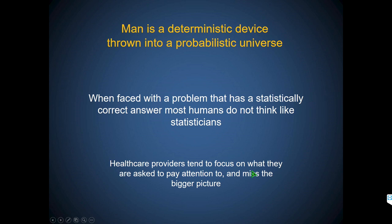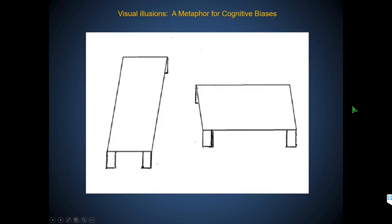As the Moneyball story illustrates, man is a deterministic device thrown into a probabilistic universe facing problems that probably have a statistically correct answer — but most humans don't think that way. Snap judgment and cognitive biases play out over and over again. Healthcare providers tend to focus on what they're asked to pay attention to. I've seen kids referred to fracture clinic with marked swelling and erythema where everyone said 'you're just not elevating enough,' and they later went to another hospital where a large abscess was drained and osteomyelitis was discovered.